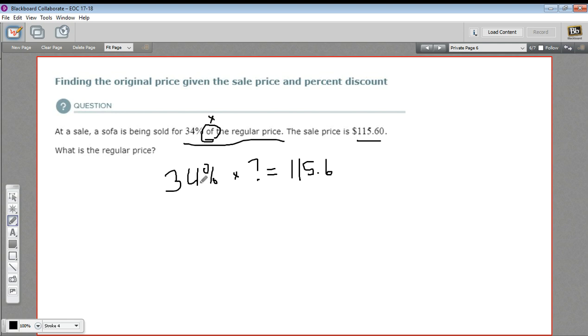To do that you move the decimal point two places to the left, so 34% becomes 0.34. I'm going to call the original price x, so this is 0.34 times x.